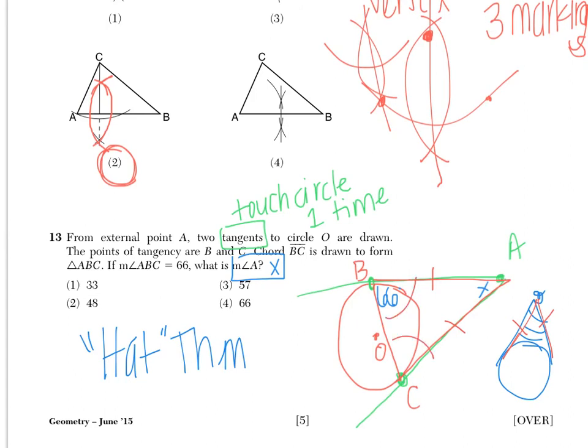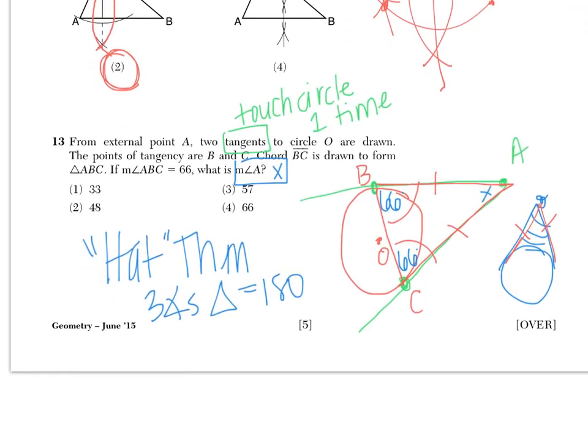So if these two sides of the triangle with those tangents are congruent, then that means that this is actually an isosceles triangle. So that means this angle, ACB, is also 66. And then we just apply the fact that three angles in a triangle equal 180. So now we have 66 plus 66 plus X equals 180. So we have 132 plus X equals 180. And when we solve for X, we get X equals 48.